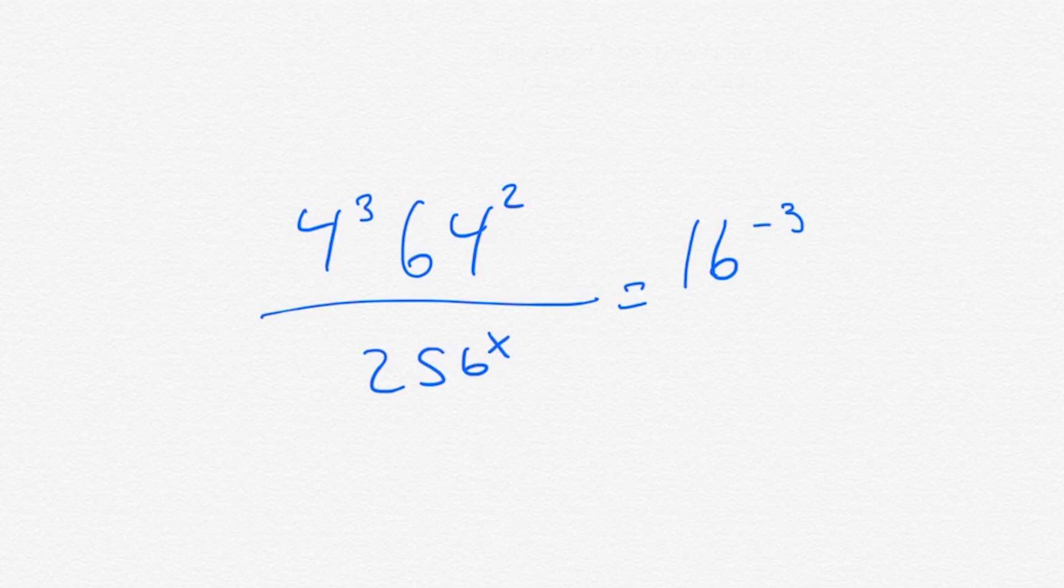We got 4 cubed times 64 squared divided by 256 to the x equals 16 to the negative third. Give this one a shot on your own by hitting the pause button, and we'll do it together in a second. I hope you tried it on your own. Now let's do it together.